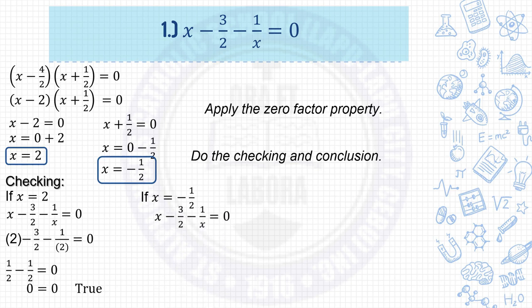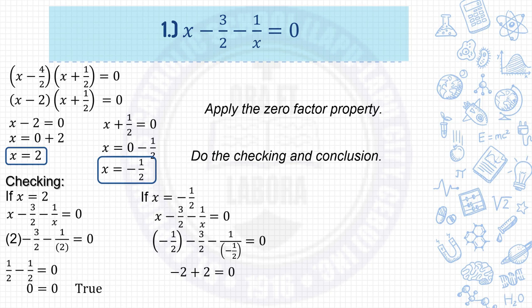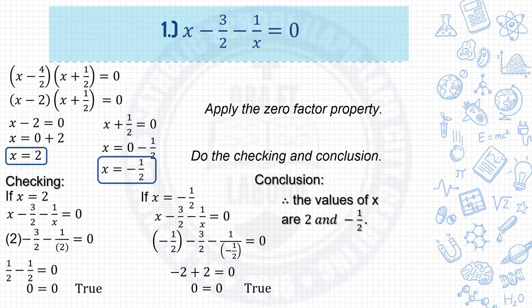If x equals negative 1 half, substitute into the given. You get negative 1 half minus 3 over 2 minus 1 over negative 1 half. Simplifying, negative 1 half minus 3 halves equals negative 2, and negative of 1 over negative 1 half equals 2. So negative 2 plus 2 equals 0, and 0 equals 0, which is true. Conclusion: therefore, the values of x are 2 and negative 1 half.